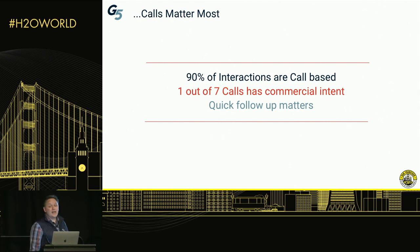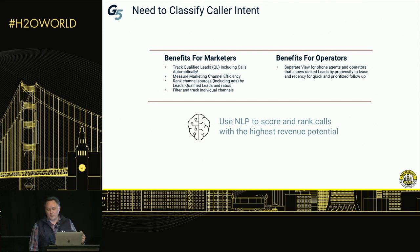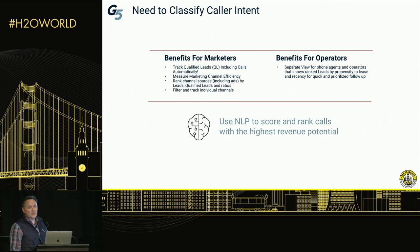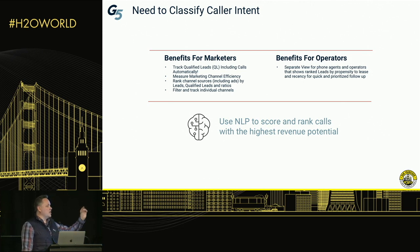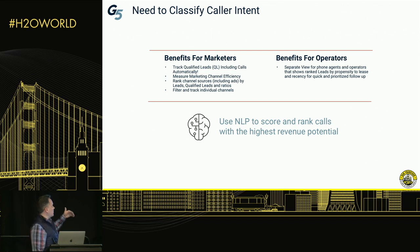If you look at calls and the propensity to lease, one out of seven calls actually has commercial intent and people would like to rent something. Taking that into account is the most important piece we have to solve for our customers. The problem we faced was the need to classify caller intent. If we classify caller intent correctly, we can track qualified leads including calls automatically at scale. We can measure marketing channel efficiency — understanding at the bottom of the funnel what was the most important channel that led to a qualified lead.